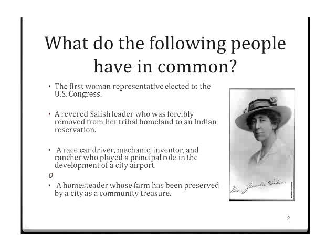In this project, students are going to be divided into teams and assigned to research the identities of mystery people. Students will discover what the following people have in common: the first woman representative elected to U.S. Congress, a revered Salish leader who was forcibly removed from her tribal homeland to an Indian reservation, a race car driver, mechanic, and inventor, and a rancher who played a principal role in the development of a city airport.